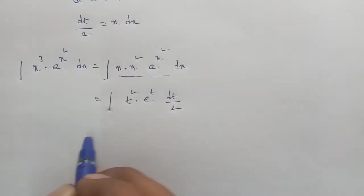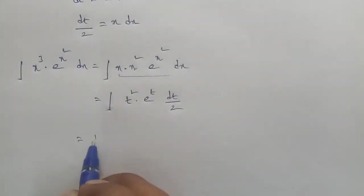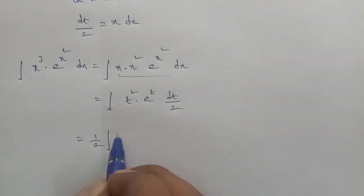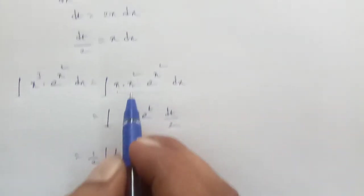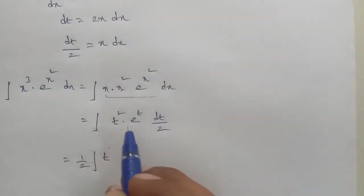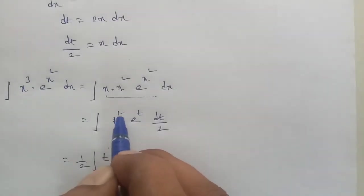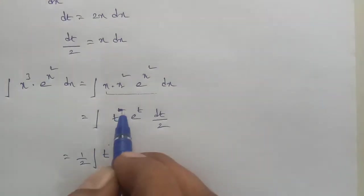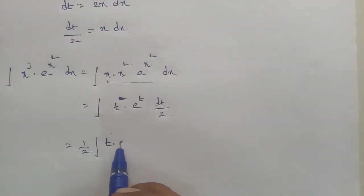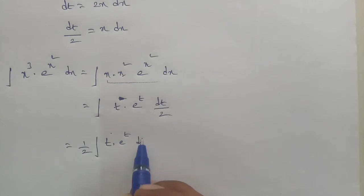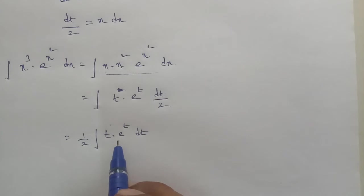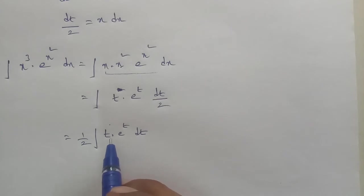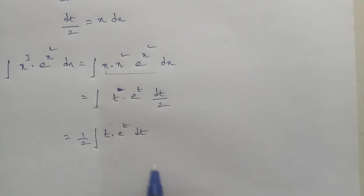Removing the constant outside the integral, we get 1 by 2 times the integral of t into e to the power t dt. Now we apply the integration by parts formula on this product.